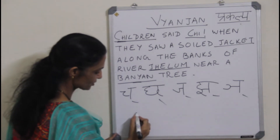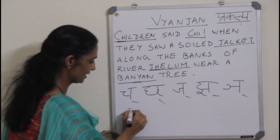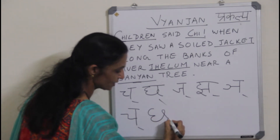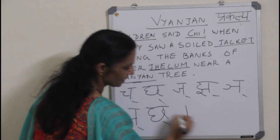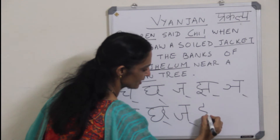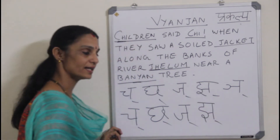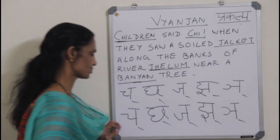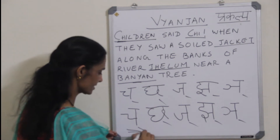Let us learn how to write them. First Cha: a tall line, a small line slightly far from it, join them, a line on top and a Halan. Then Chh: a C, another C which extends into a loop, a small line on top of this, a line to join, and a Halan. Then Jh: a tall line, a small line, an inverted C, a line on top and a Halan. Then Jh: write something like an E, a line, joining a tall line, a line on top and a Halan. Last one Nya: a tall line, a small horizontal line, a reverse C, a line on top and a Halan. So these are Cha, Chh, Jh, Jh and Nya — and these are called Chhavar, as they start with Cha.